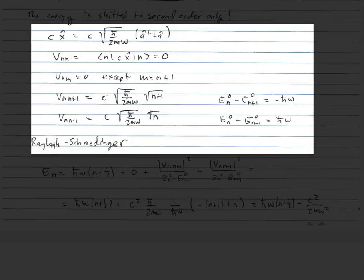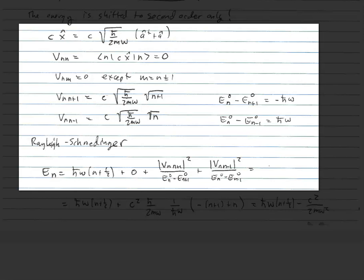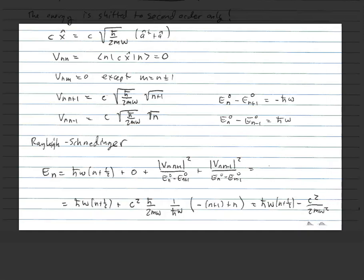Plugging in the Rayleigh-Schrödinger formulas: the first-order shift is 0. For the second-order shift, we get two terms — one for VN,N+1 and one for VN,N−1. Plugging in the squares of those matrix elements, the first term — because the energy denominator is negative — gives 1/ℏω times (−(N+1) + N) = −1/ℏω. The ℏ cancels, giving −1/(2Mω²) = −C²/2K. And indeed we get the correct exact answer.